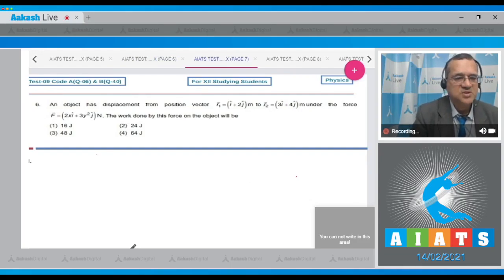Let us go to question number 6. An object has a displacement from position vector r1 = i + 2j meter to r2 = 3i + 4j meter under force F = 2xi cap + 3y² j cap newton. The work done by this force on the object will be, these are 4 options.